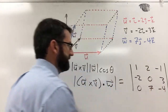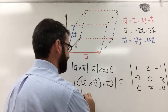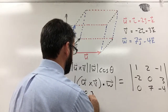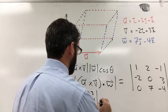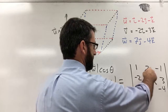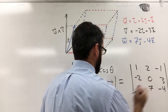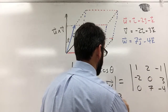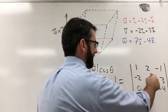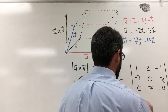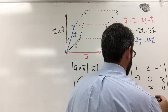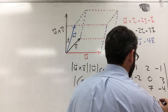This is going to be 1 times the determinant of the submatrix [0, 3; 7, negative 4], minus 2 times the determinant of [negative 2, 3; 0, negative 4], plus negative 1 times the determinant of [negative 2, 0; 0, 7].